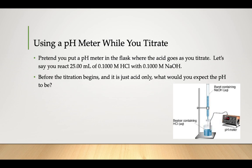Let's say you put that pH meter in the flask where the acid goes and let's put 25 milliliters of a 0.1 molar hydrochloric acid solution in a flask down below and a 0.1 molar solution of sodium hydroxide in your burette. So before the titration begins and it's just acid only and you wanted to know what the pH meter would say the pH is.